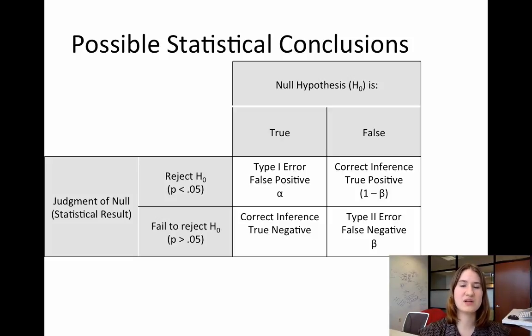The power is the likelihood of rejecting the null hypothesis when the null hypothesis is false, and so it's the likelihood of making that true positive.